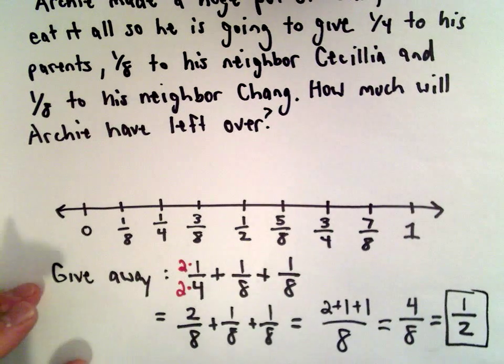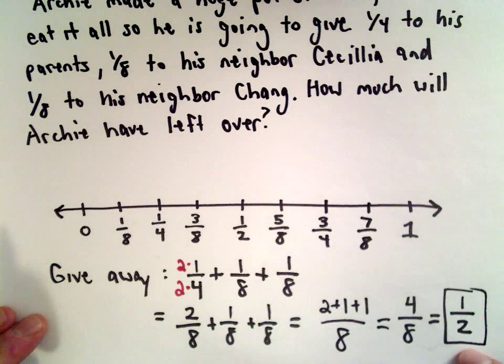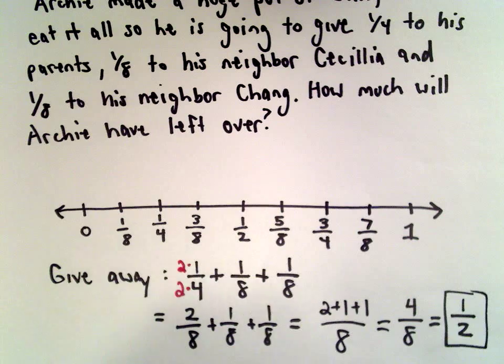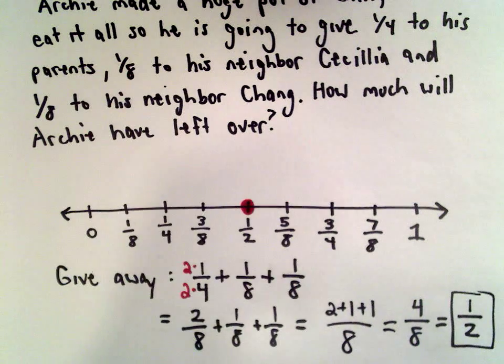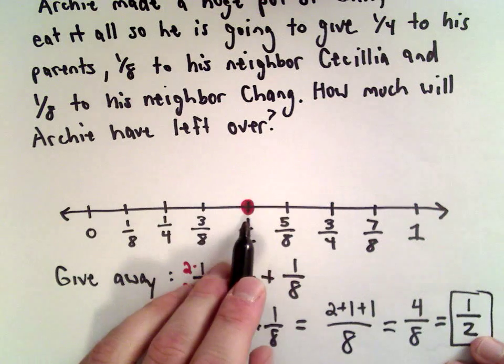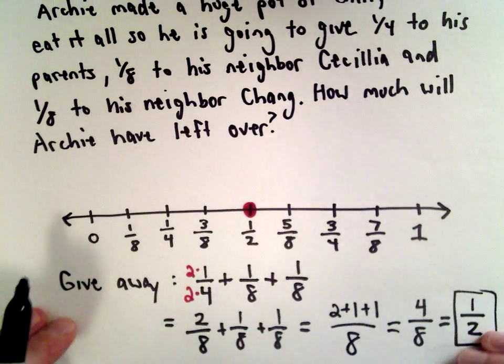So that means in total he's giving one-half of it away. So if he's giving one-half of it away, that means he would have one-half of it left. So that would be the answer choice here, or how we would indicate our answer. We would put a little dot over the number one-half.